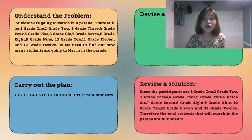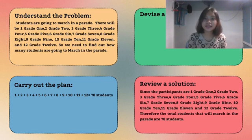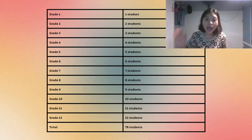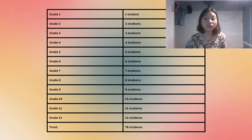Continuing forward, we will devise the following plan. Known terms are 1 grade 1, 2 grade 2, 3 grade 3 — the rest are unknown. Based on the pattern of the numbers, we are assuming that the rest of the unknown terms are based on the corresponding grade level. So we will create a table and total the population until we find the answer. We shall carry out the plan: on the first column is the grade level, the second column depicts the population of each grade level. Following the plan we devised, we shall add the sum from all grade levels, totaling to 78.